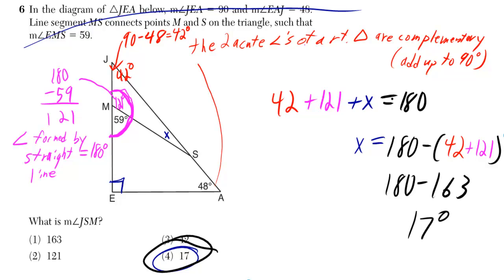So once we've got the 42 and the 121, you can use the fact that we have a triangle JMS where those three angles have to add up to 180. So then you can do 42 plus 121 plus x is equal to 180 and solve it for x.